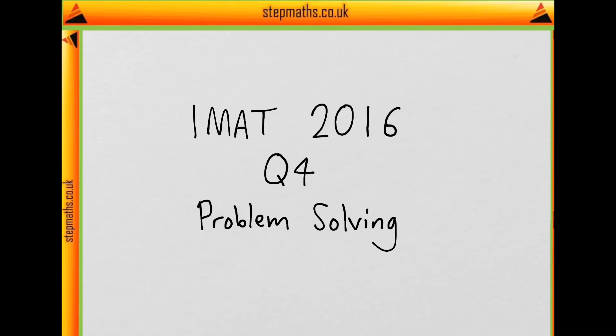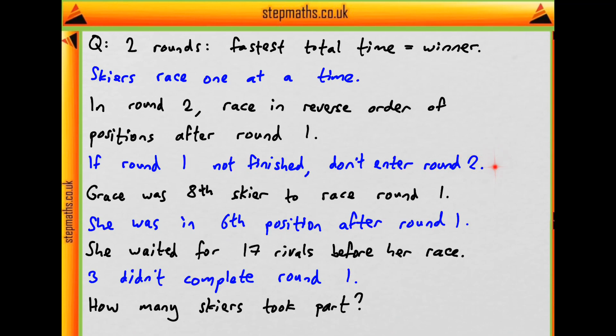This is question four on problem solving from the 2016 IMAT. We're told that in a skiing competition, there are two rounds and the fastest total time across both rounds is the winner.